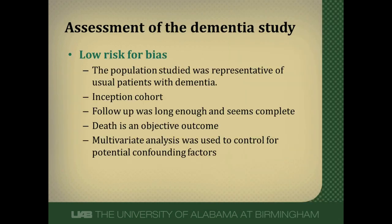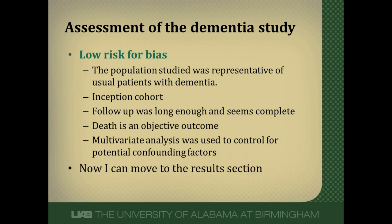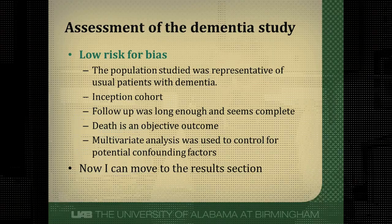My overall assessment: this study is very low risk for bias. The population was representative of everyone with dementia; they used an inception cohort starting at first diagnosis; follow-up was long enough and appeared complete; death was a very objective outcome with a reasonable method for capturing it; and differences between groups were controlled for with multivariable modeling. I feel very comfortable going on to determine the results and hopefully applying them to my patient. I hope this video has helped you understand how to critically appraise a prognostic study — if you have any questions, contact me through the course website or my blog.